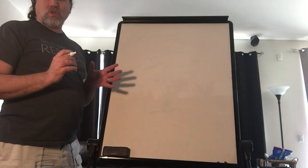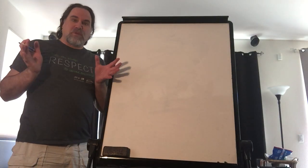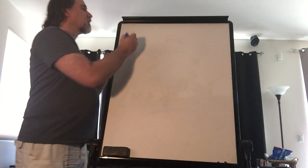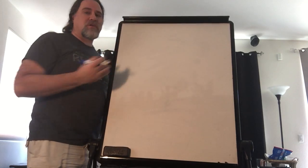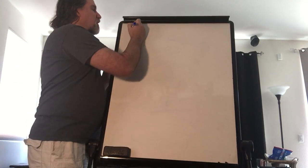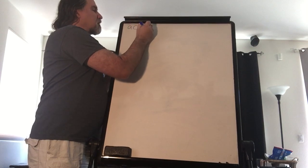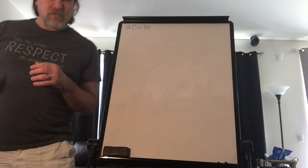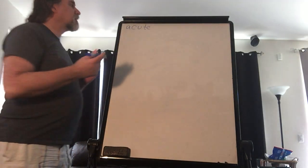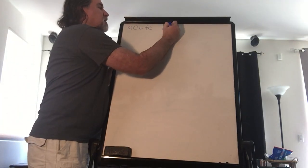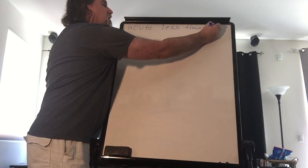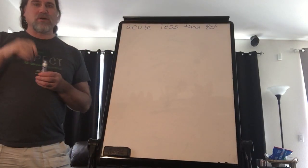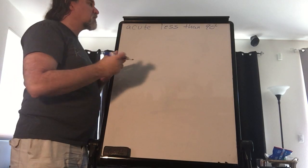So we're going to start off with the basic three angles. What are the three types of angles? We've got the acute angle. Acute means less than 90 degrees.